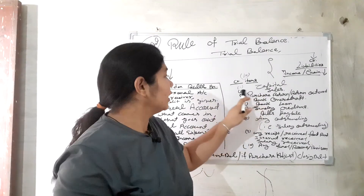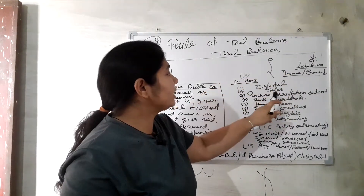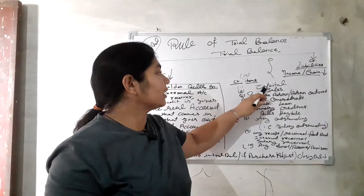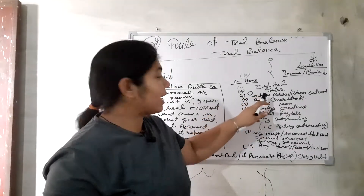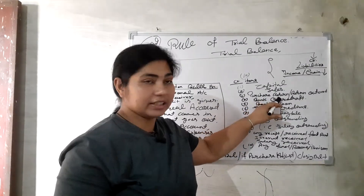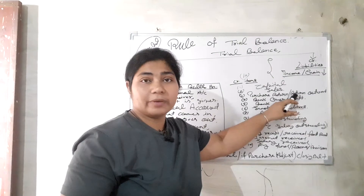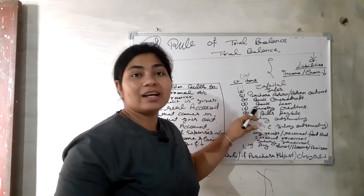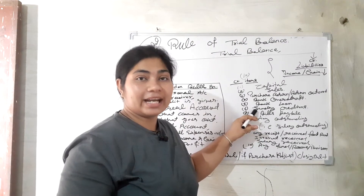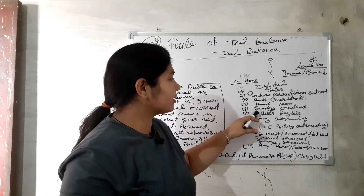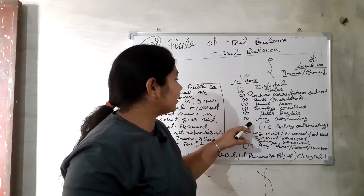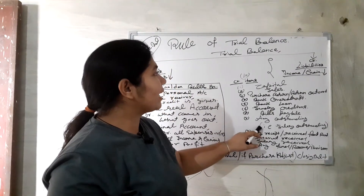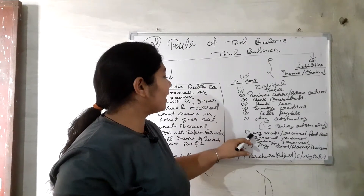In the credit items: first is capital (punji) — capital comes on the liability/credit side of the trial balance. Second is sales. Third is purchase return, also called return outward. Fourth is bank overdraft. Fifth is bank loan. Sixth is sundry creditors. Eighth is any outstanding amount — for example, outstanding salary — which comes on the liability/credit side.